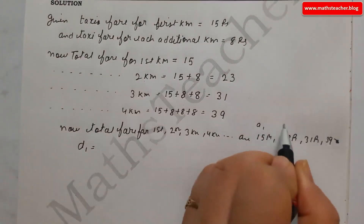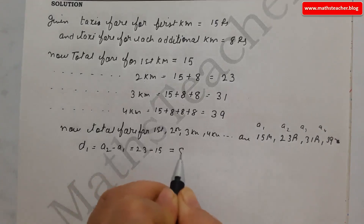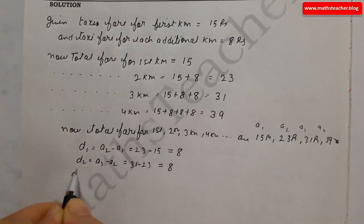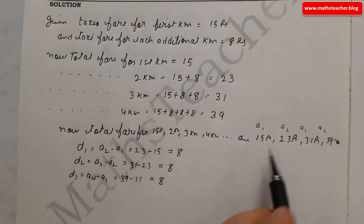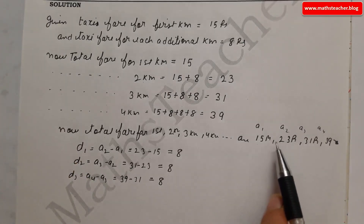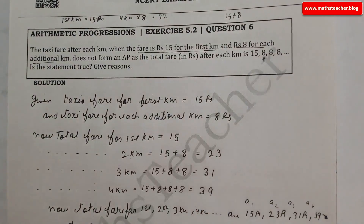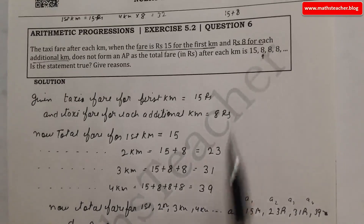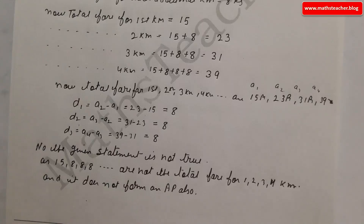Now check common differences: D1 = A2 − A1 = 23 − 15 = 8. D2 = A3 − A2 = 31 − 23 = 8. D3 = A4 − A3 = 39 − 31 = 8. Since D is the same throughout, 15, 23, 31, 39 does form an AP. Therefore the given statement — that it does not form an AP — is not true.